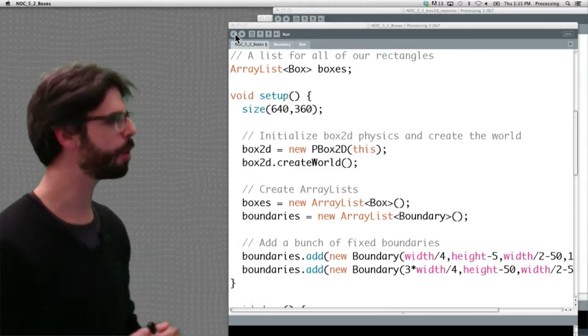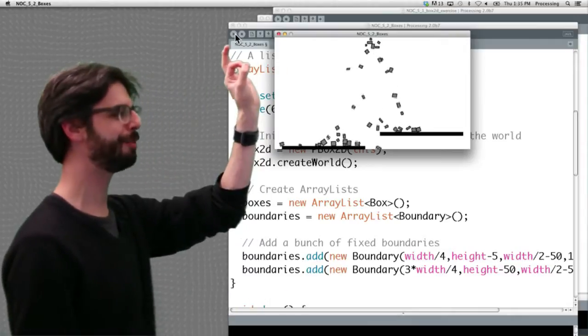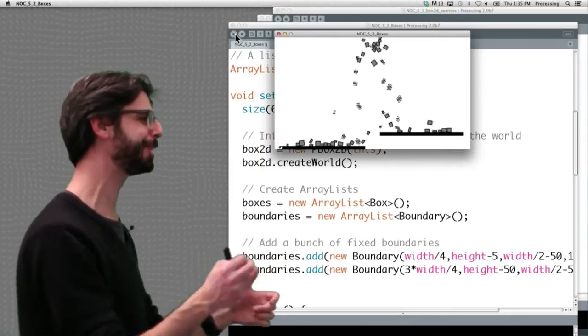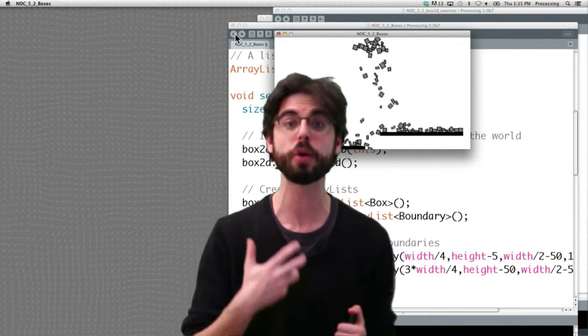If I run this example, we see this is hello world Box2D. We've got boxes coming out of a point, they're falling, they're responding to physics, they're colliding, they're bouncing off of these platforms. All of the physics in this example are being controlled by Box2D.